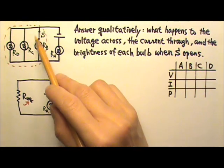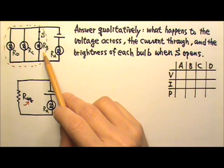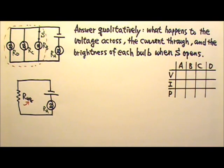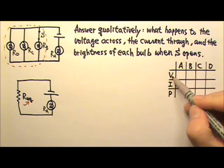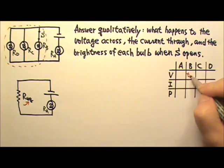Because when we open the switch S, bulb B becomes disconnected from the circuit, which means the voltage across bulb B becomes zero.